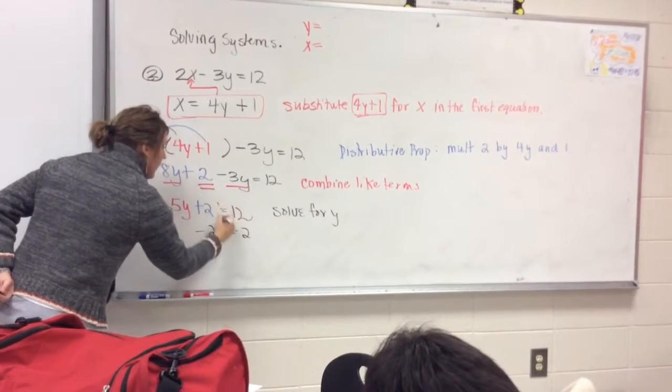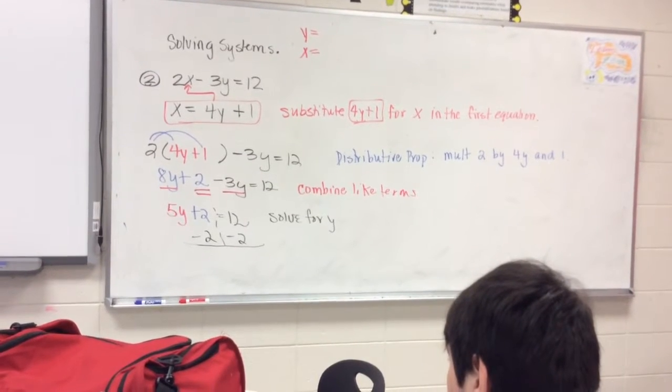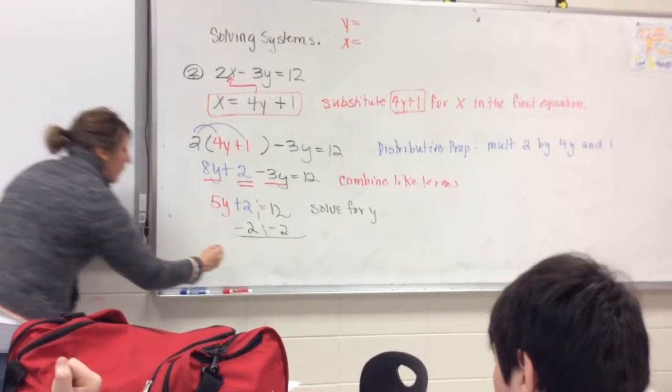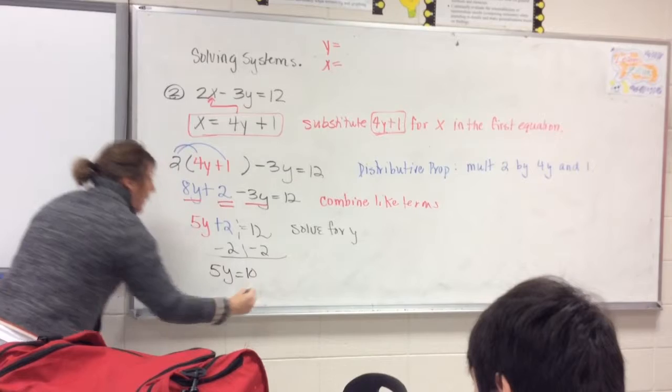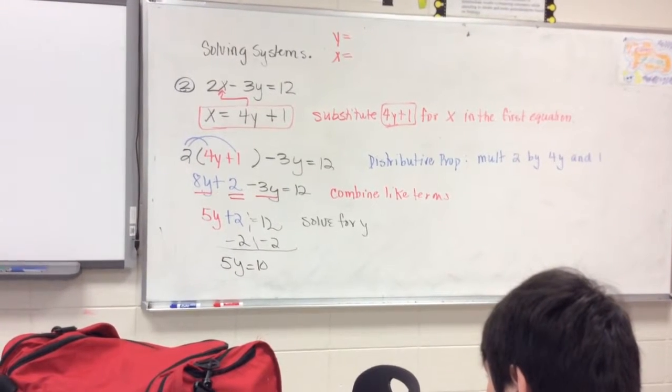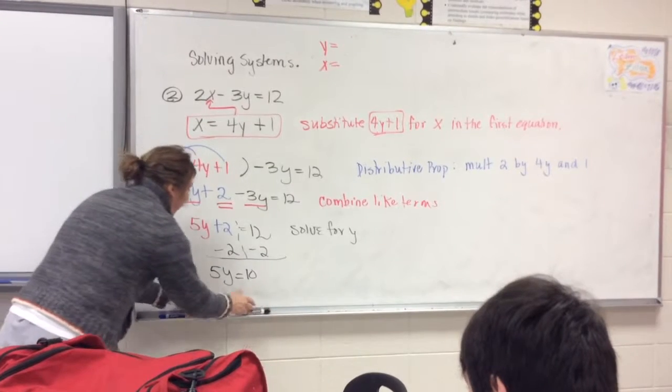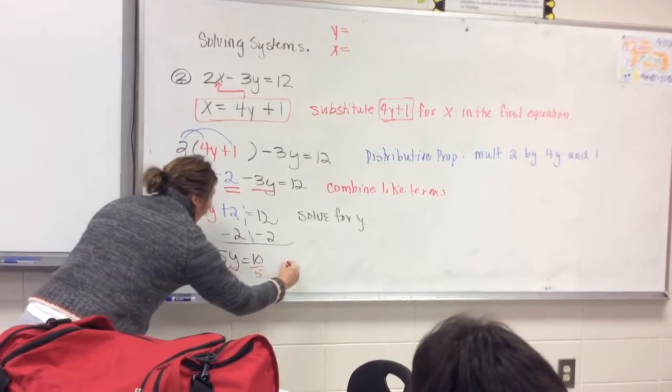Negative 2 to both sides. And when you subtract 2 from both sides, what are you left with? 5y equals 10. And then you have to do what from here? Yeah, divide both sides by 5. And when you divide both sides by 5, you get y equals 2.